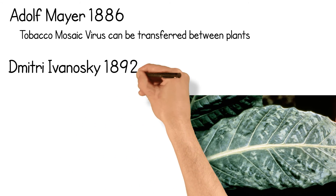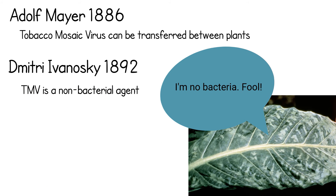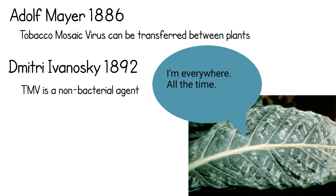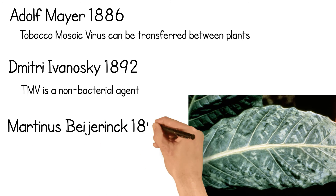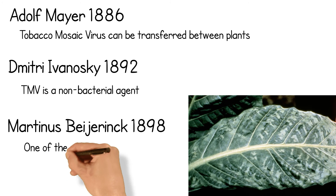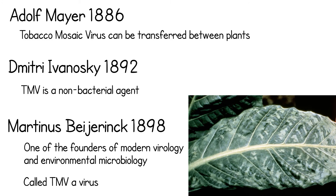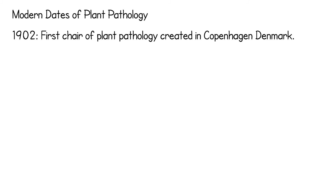Dmitry Ivanovski, 1892, continued work on tobacco mosaic virus with filters and discovered that TMV is a non-bacterial agent. He proved that TMV is not a bacteria because it cannot be filtered like bacteria. In 1898, he is considered one of the founders of modern virology and environmental microbiology. He proved that TMV was particulate and used the term 'virus' to describe the disease. 1902 — the first chair of plant pathology was created in Copenhagen, Denmark.